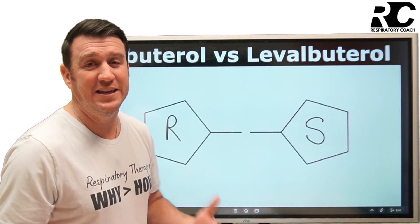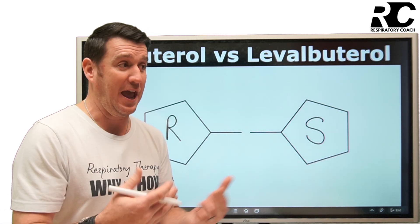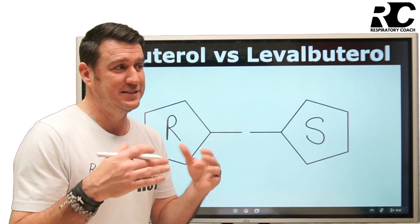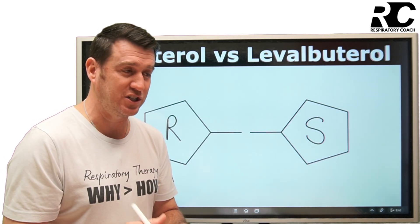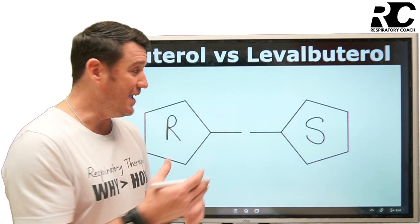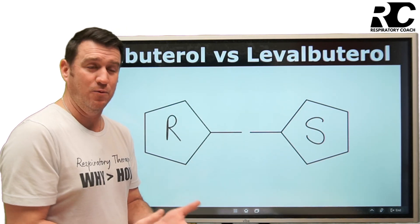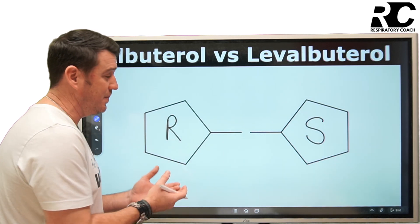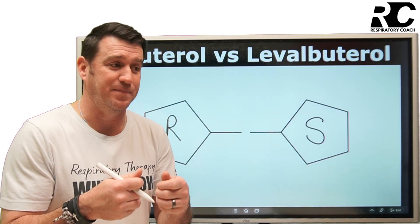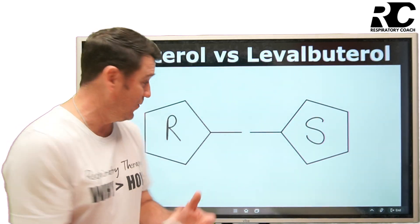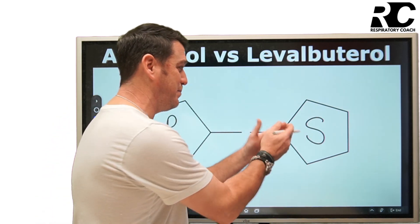We have to remember why we're giving albuterol — to help relieve any type of reversible airflow obstruction: asthma, chronic bronchitis, patients who present with bronchoconstriction due to smooth muscle constriction, also referred to as bronchospasm. They might respond to a bronchodilator. Albuterol is a common one. The R isomer is the one that contains the active ingredients — it's the isomer that creates the bronchodilation effects, and we like that.